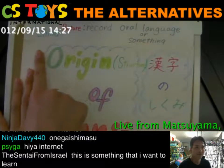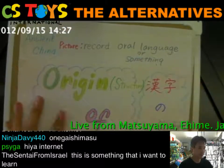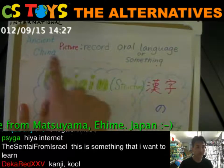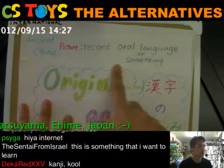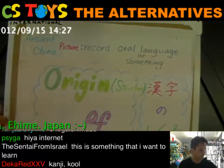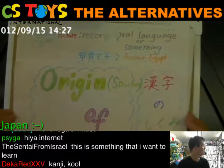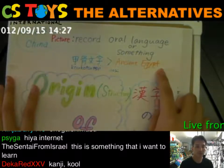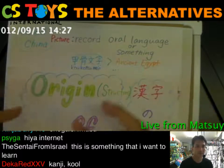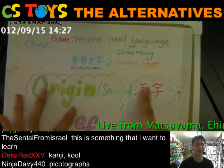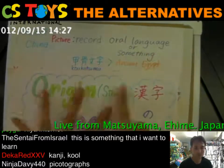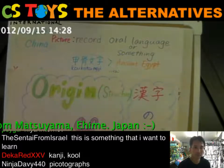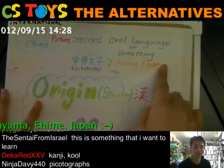In ancient China, people used pictures to record oral language or something important. In ancient Egypt, people also used pictures to record things. But the Chinese characters - we call this koukotsu moji - were more characterized than ancient Egyptian hieroglyphics.